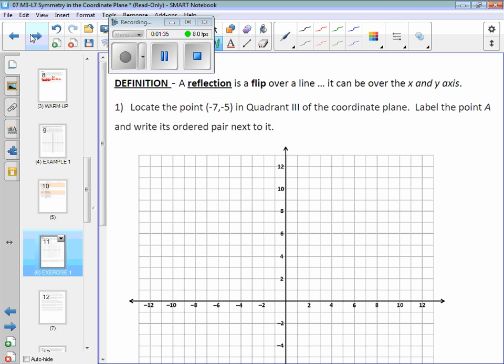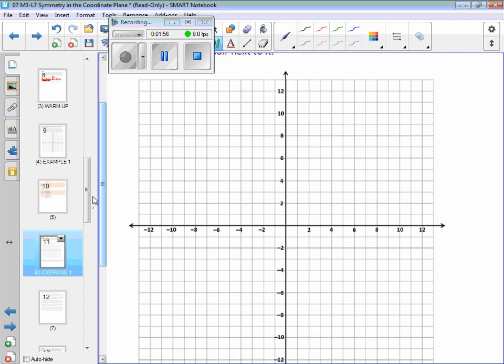A reflection is a flip over a line, and it could be over the X or the Y. As you'll see, we're going to do both. The first thing I want you guys to do is locate the point negative 7 and negative 5, and plot it, and give it the letter A. Everybody do that now. Negative 7, left or right, up or down, to start.